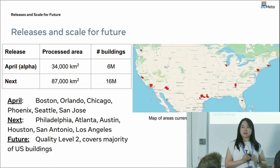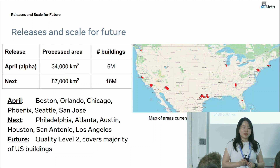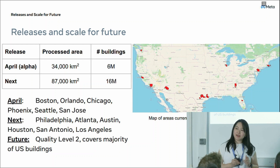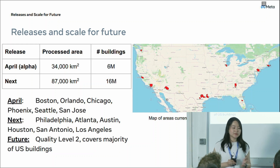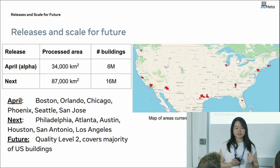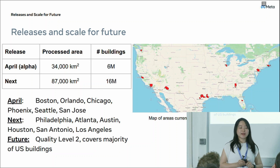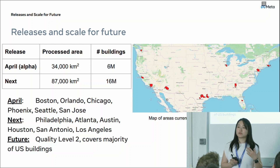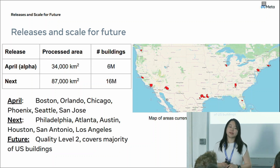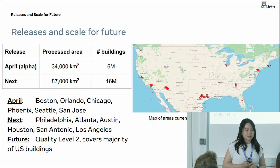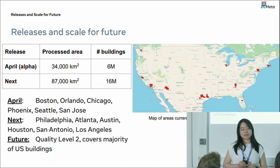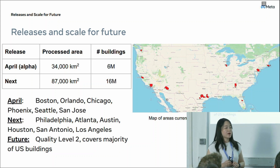So that's the background information. Now let's move on to the release. So far we actually only have one release, which happened in April. This release covers Boston in Massachusetts, Orlando in Florida, Chicago in Illinois, Phoenix in Arizona, Seattle in Washington State, and San Jose in California. This release processed over 60 million buildings across an area of 34,000 square kilometers.